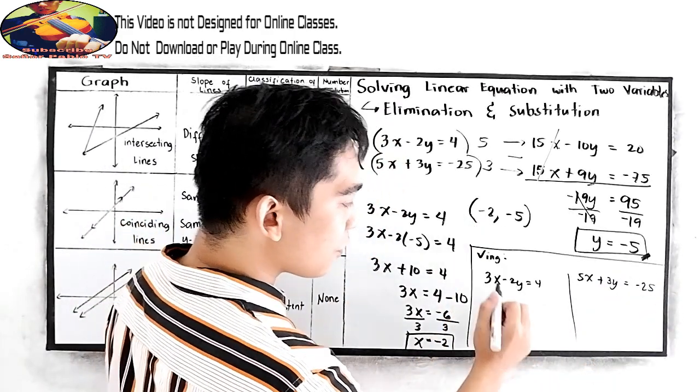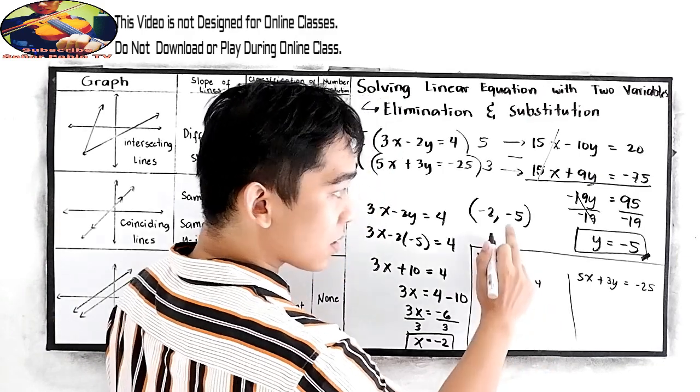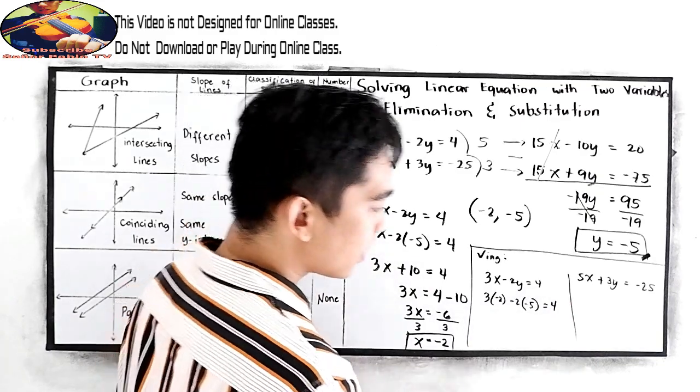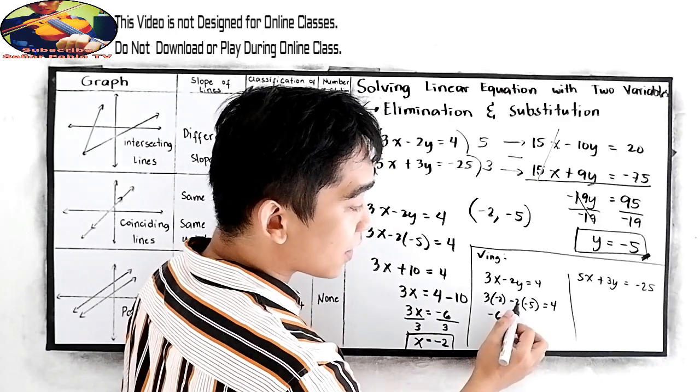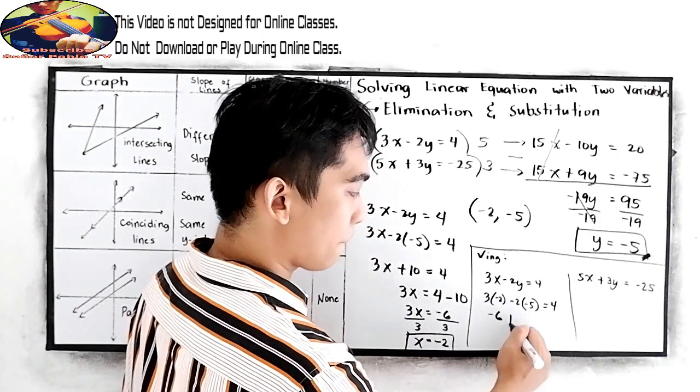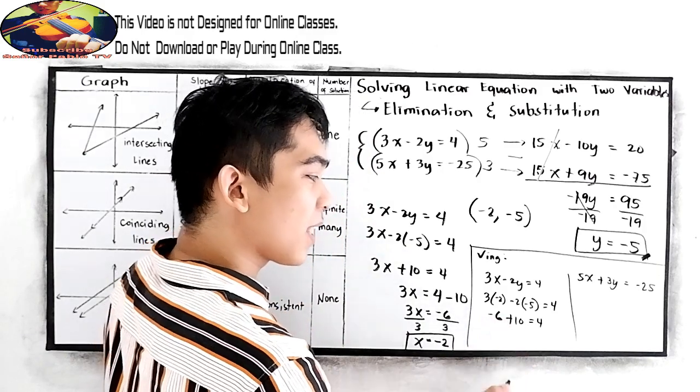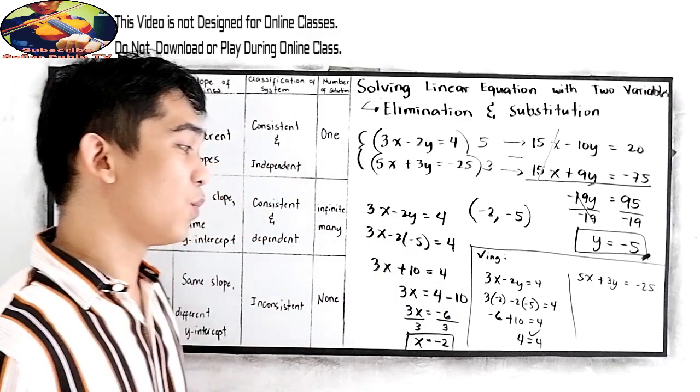So, negative 2 for x, so 3 times negative 2 minus 2 times negative 5 is equal to 4. 3 times negative 2, negative 6. Negative 2 times negative 5, positive 10 is equal to 4. Negative 6 plus 10, that is 4, is equal to 4. Which is true.